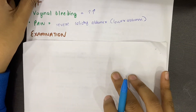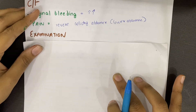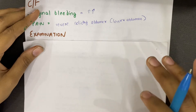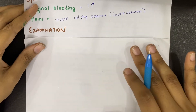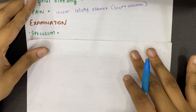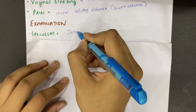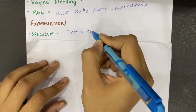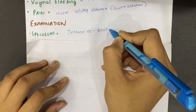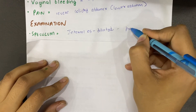Next comes examination. As I have told you in threatened miscarriage, examination should be avoided if ultrasound is available. But if we do perform an examination, then on speculum examination we will see that the internal os is dilated, through which the products of conception can be felt.